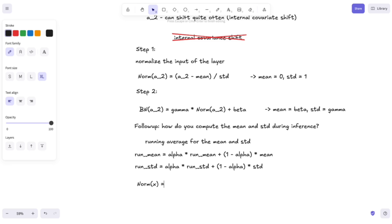So, norm of x would be equal to x minus the running mean, divided by the running standard deviation. And that's basically it for this video. I hope you liked it and I will see you in the next one. Bye-bye!